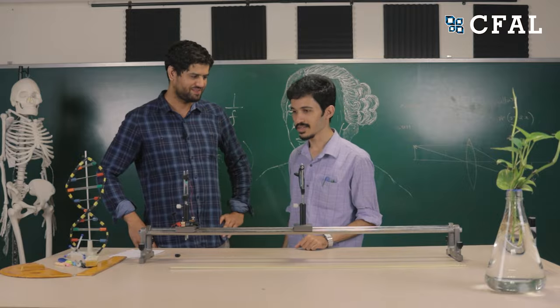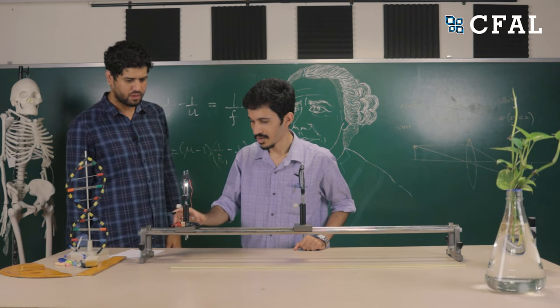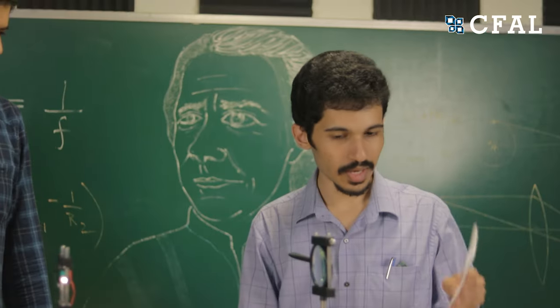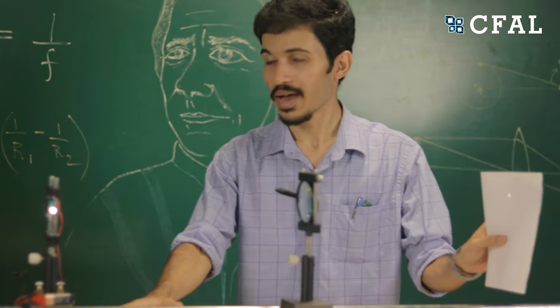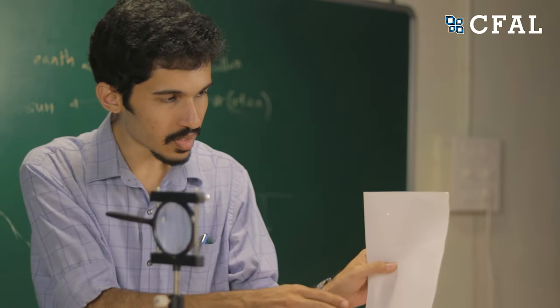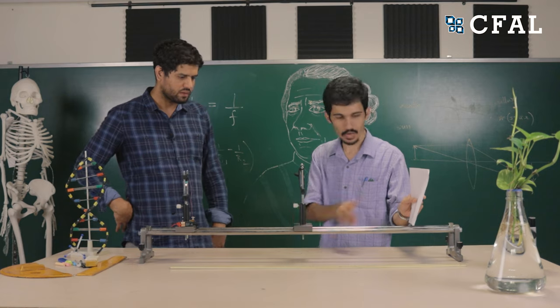Here we have a convex lens, and I have kept an object — a source of light — at a distance of 2F from the convex lens. If I turn this bulb on, we know from the lens formula and ray diagrams that the image should be formed on the other side at a distance of 2F. You can see that it's being captured on this piece of paper. That small thing is the filament of the bulb.